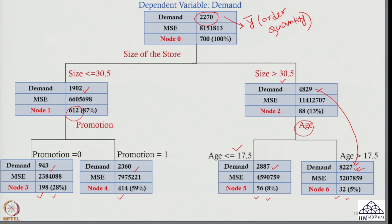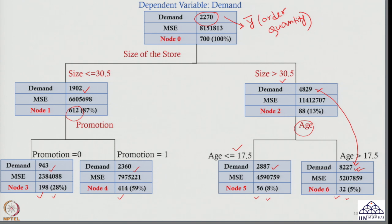The retailers in node 6 are those whose size is more than 30.5 thousand square feet and age is more than 17.5 years. So now I have used three independent variables: first, size of the store; second, promotional offer — whether a promotional offer was given by the retailer or not; and third, age of the store — how long they have been in existence. Using these three variables I can predict the demand, or the order quantity, by the retailer.